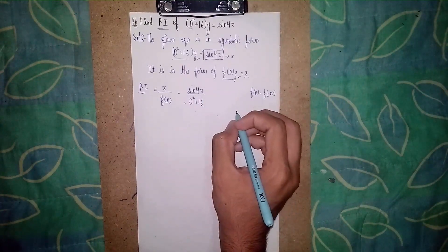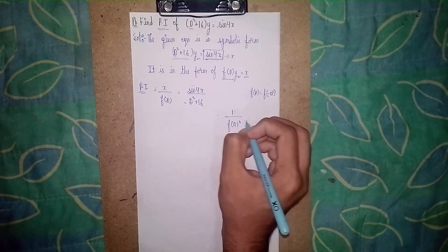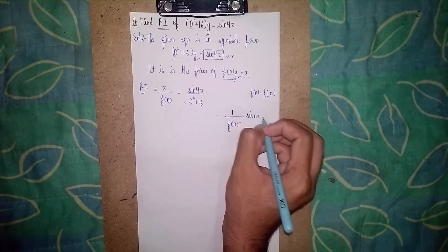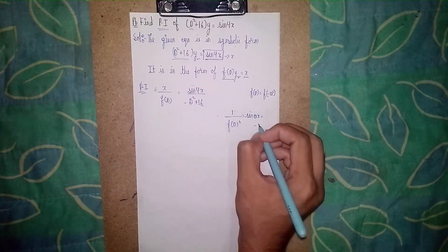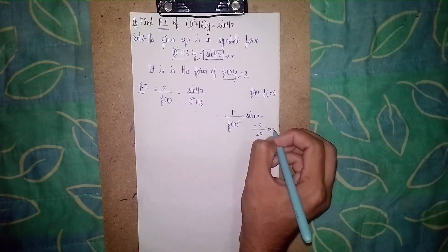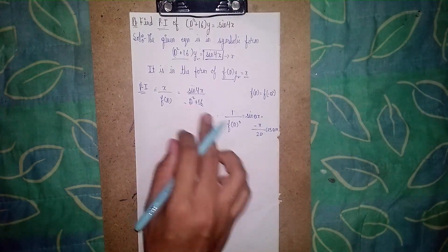The formula is: 1/f(D²) sin(ax) = -x/(2a) cos(ax). So don't substitute direct value here.